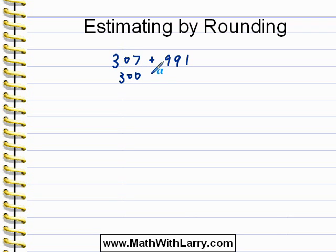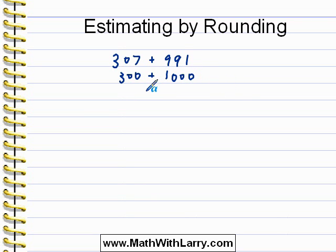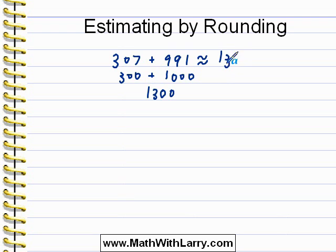In the case of 991, someone would be justified in saying let's make it 990, but I see that it's very close to 1,000, so I could actually make it 1,000 just to make my job a little easier. And of course 300 plus 1,000 is 1,300. I can use this symbol which means approximately — 307 plus 991 is approximately 1,300. We got an estimated answer by rounding.